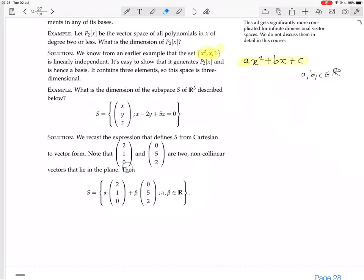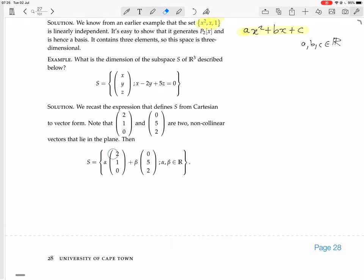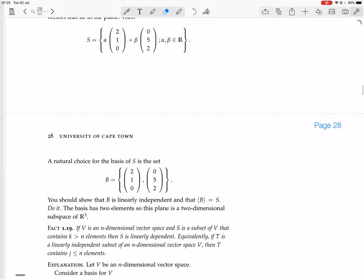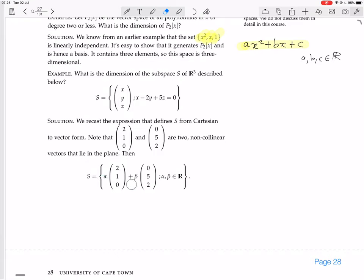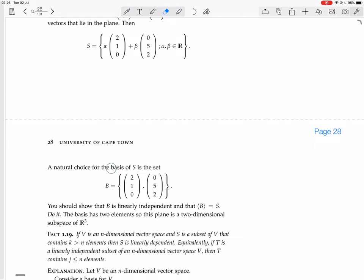So we have two non-collinear vectors that lie in the plane. That means that this set S is actually the linear combination of every linear combination of those two vectors. Now for me that seems to be begging the question, because how do you know that you don't need a third vector? How do you know that this generates the whole of S? A natural choice for the basis of S then is the set {(2,1,0), (0,5,2)}. You should show that B is linearly independent and that B generates S.